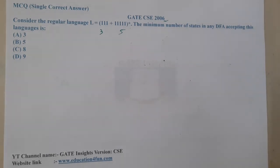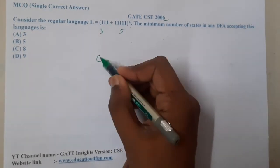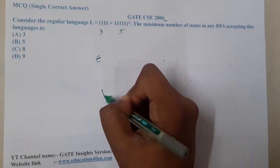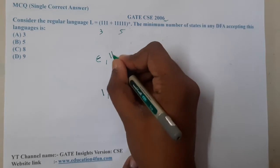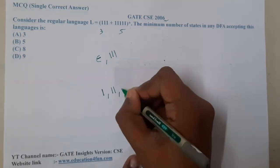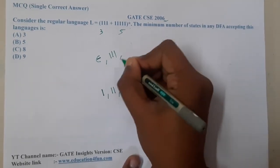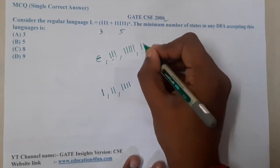So what can I observe here? By using this expression, I can generate epsilon. I cannot generate one one (single one) or two ones. I can generate triple one (three ones). I cannot generate four ones. I can generate five ones, and I can generate six ones by using this twice.